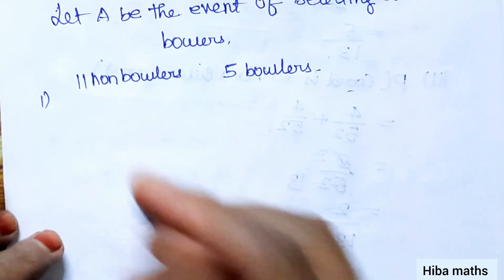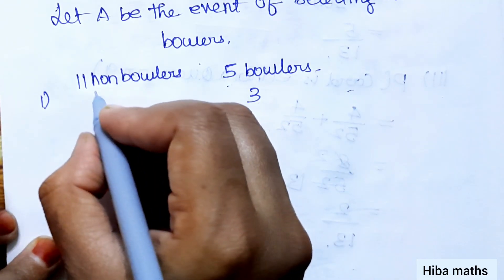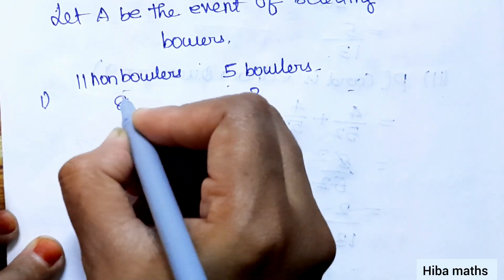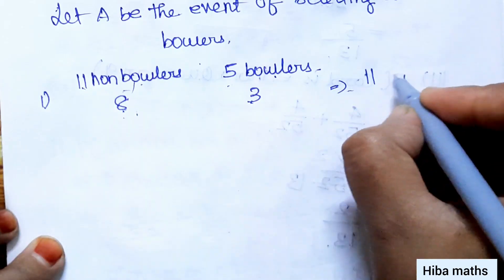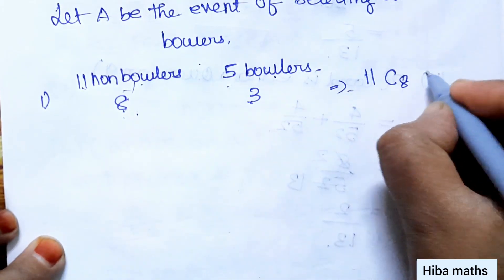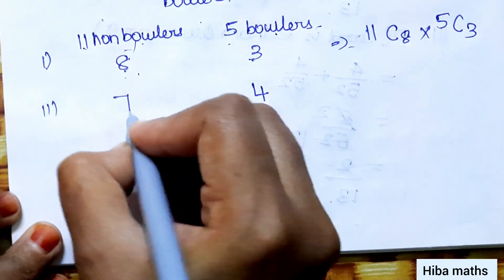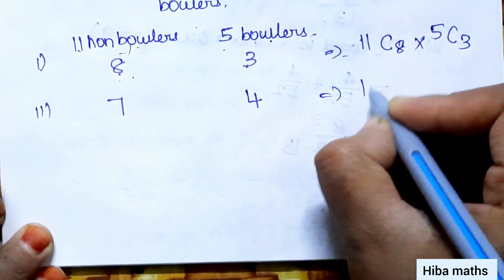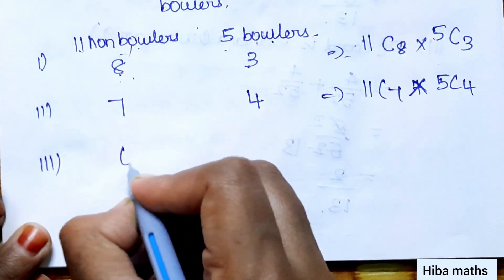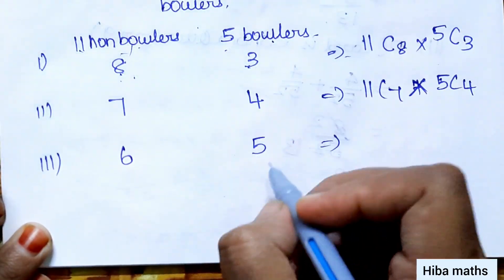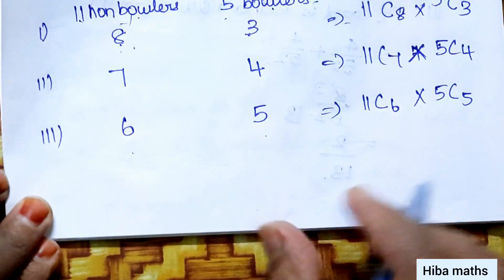Let's add these combinations. First, 3 bowlers from 5 and 8 non-bowlers from 11: that gives 5C3 into 11C8. For 4 bowlers: 4 plus 7 equals 11, so 5C4 into 11C7. For 5 bowlers: 5 plus 6 equals 11, so 5C5 into 11C6.